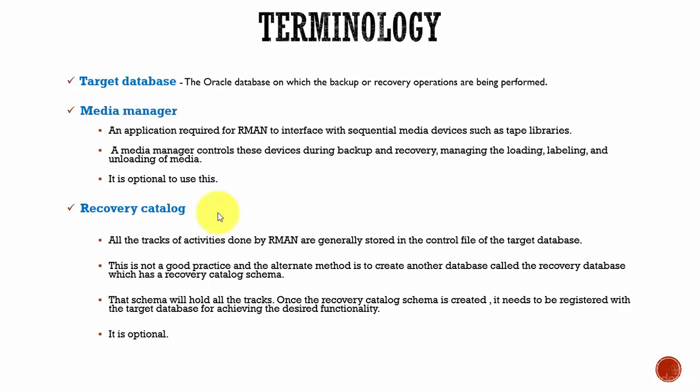So what's the good method? The good method is creating another database, which we can call a recovery database. In that recovery database, we can create a schema to store all the recovery manager related activities. This recovery catalog is nothing but a schema configured in a separate database to track all activities performed by the recovery manager. Once we create this recovery catalog, we register it with the target database so that RMAN-related activity is stored there instead of in the control file.